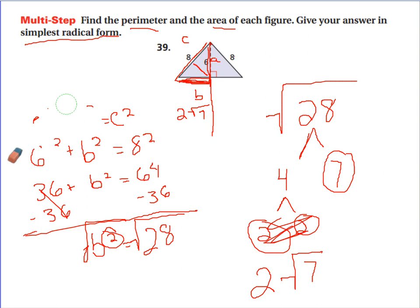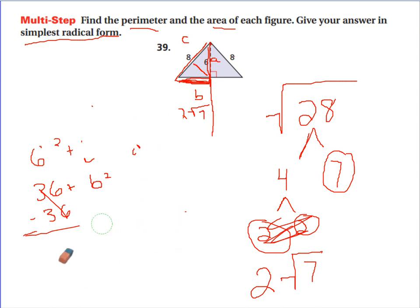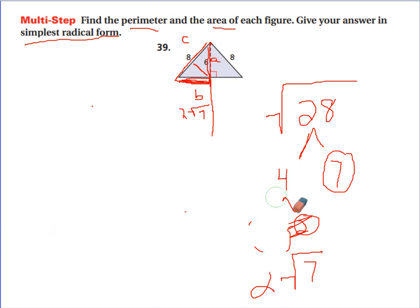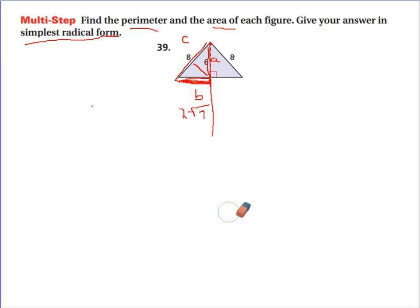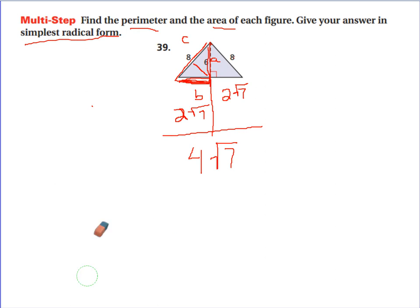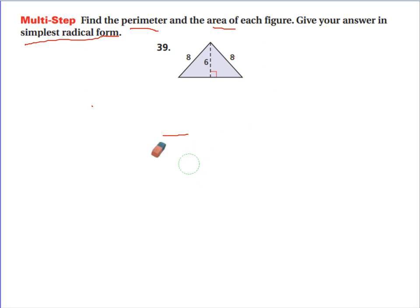So this part on the left is 2 square root of 7. The triangle on the right has the same hypotenuse of 8 and the same side of 6, so that side is also 2 square root of 7 by the same process. I have 2 square root of 7 plus 2 square root of 7, so the total bottom side is 4 square root of 7.